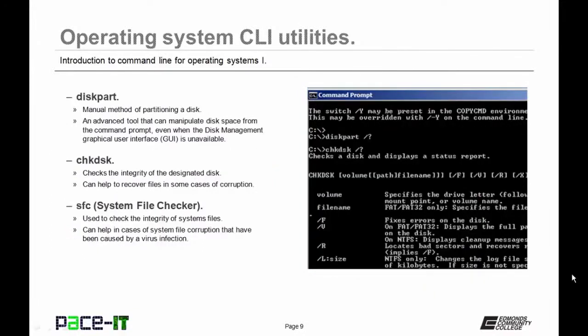Now let's move on to taking care of the hard drive. The first command is diskpart — disk partitioning. It's a manual method of partitioning a disk and an advanced tool that can manipulate disk space from the command prompt, even when the disk management GUI is not available. CHKDSK, or check disk, checks the integrity of the designated disk and can help recover files in cases of corruption.